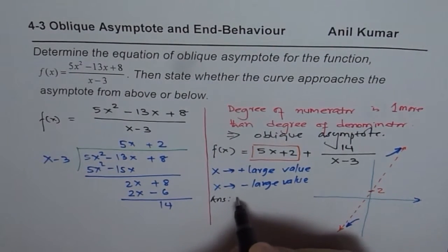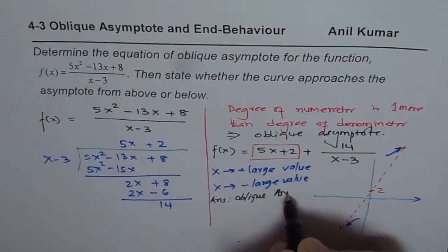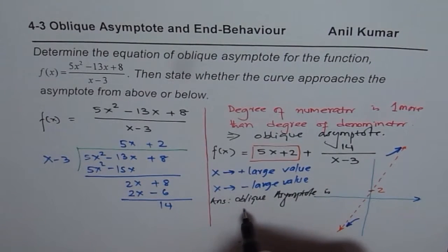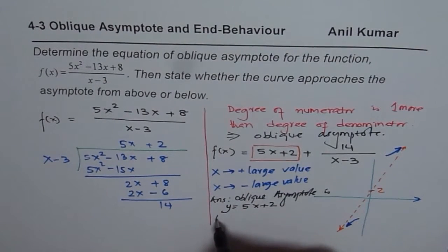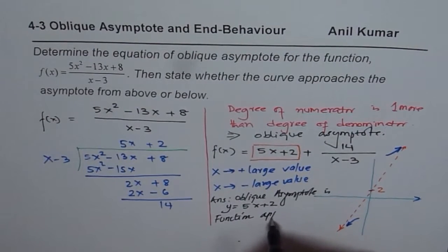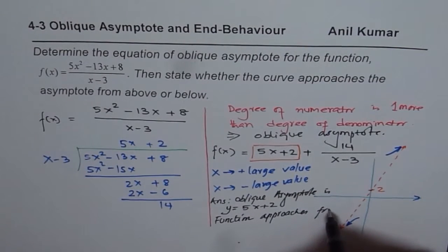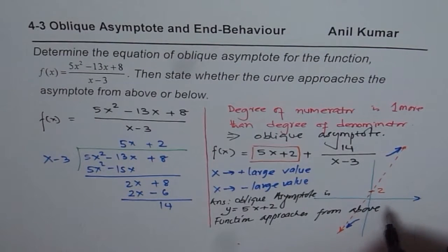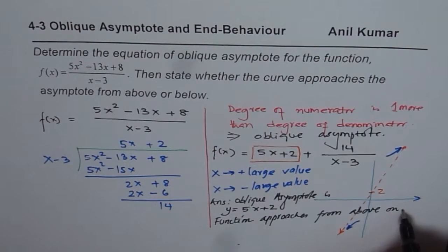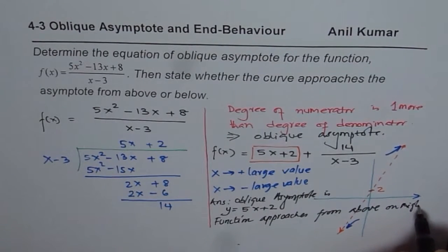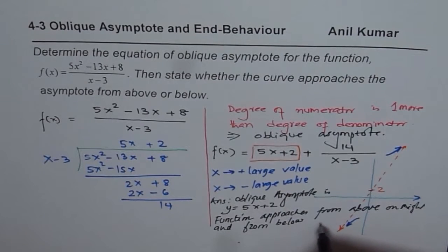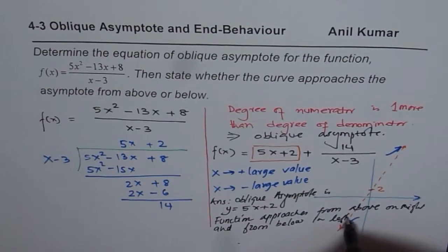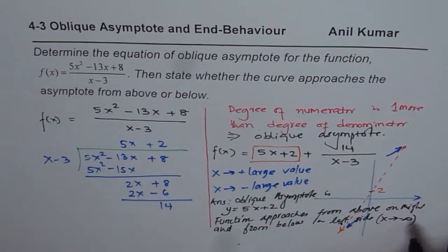To summarize: the oblique asymptote is y = 5x plus 2. The function approaches from above on the right side — that is, as x approaches positive infinity — and from below on the left side, meaning as x approaches negative infinity.